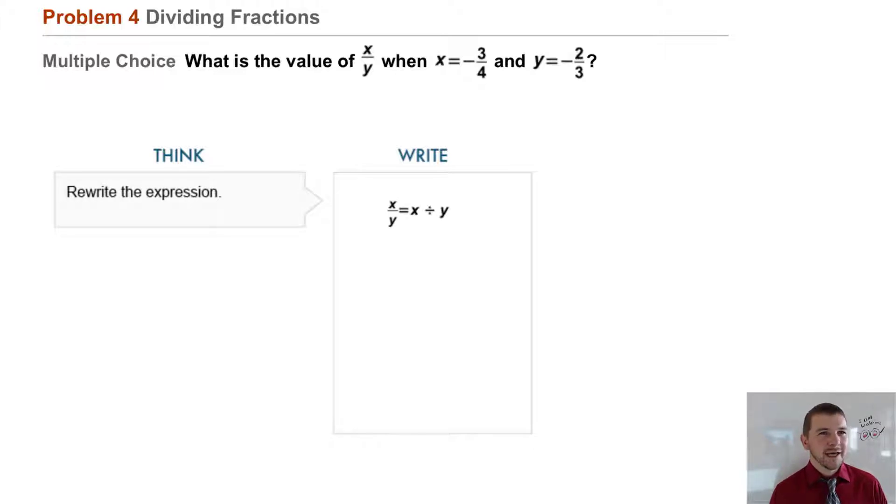We rewrite the expression x/y. A fraction bar can be represented by a division sign, so we write x divided by y. Next, substitute -3/4 for x and -2/3 for y. We write -3/4 divided by, and then parentheses are a good idea here so we don't get our signs mixed up, -2/3.